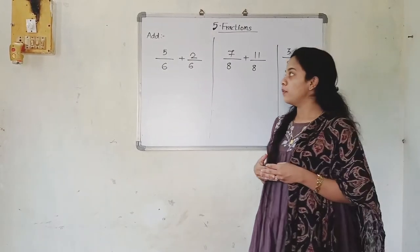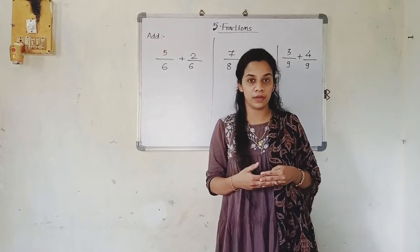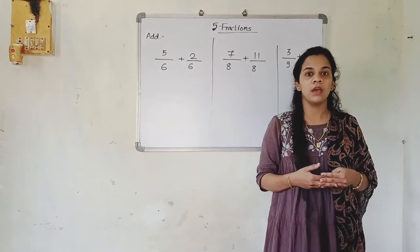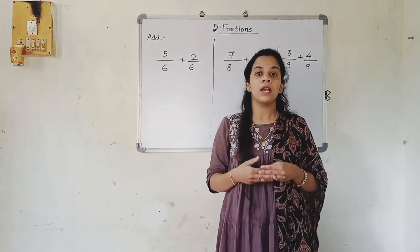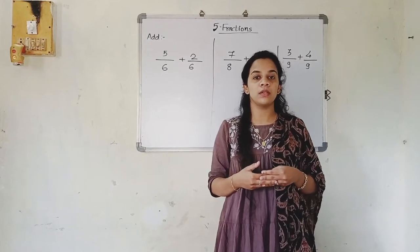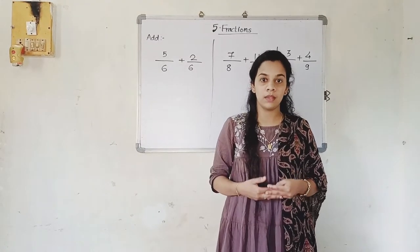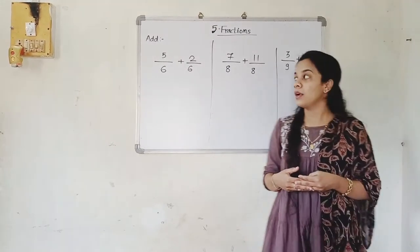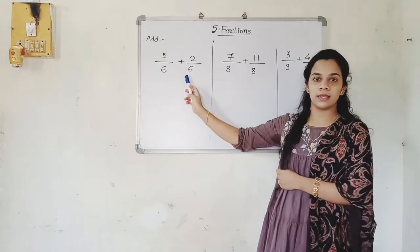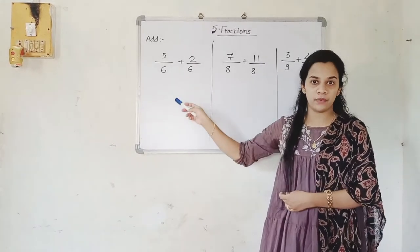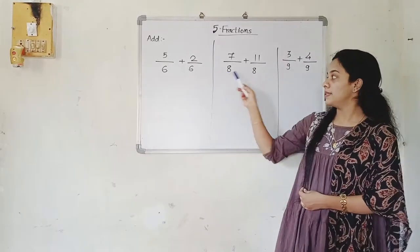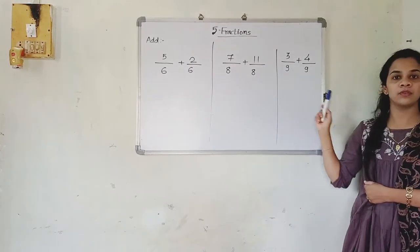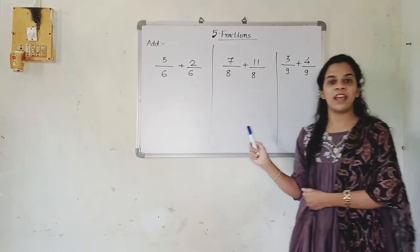There are a few questions based on like fractions and addition of like fractions. First of all, what are like fractions? Like fractions are those whose denominators are the same. You can see here the denominator is 6 and 6, so they are like fractions. Here it is 8 and 8, and 9 and 9 — so they are also like fractions.